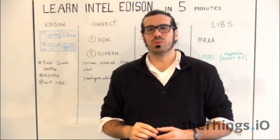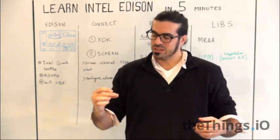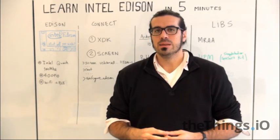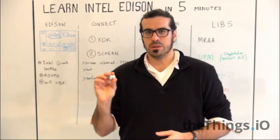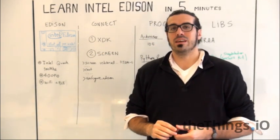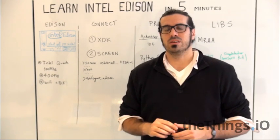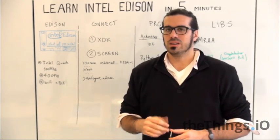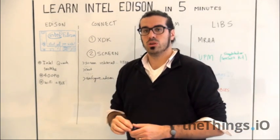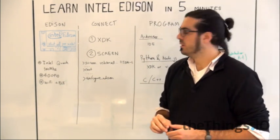To connect the Edison to your computer — that's the second step — you need to plug two mini USB cables into your breakout. Then you have at least two choices to program the Intel Edison. The first one is the XDK, an IDE made by Intel where you can program with C, C++, Node, or Python, targeting the Yocto Linux operating system running inside the Edison.